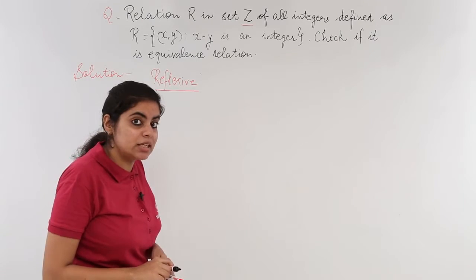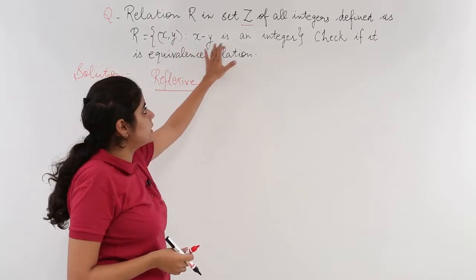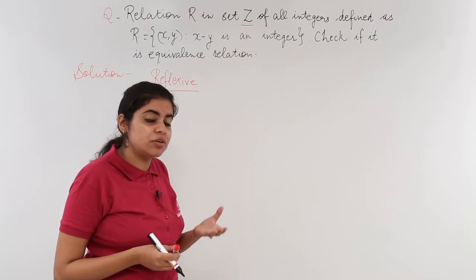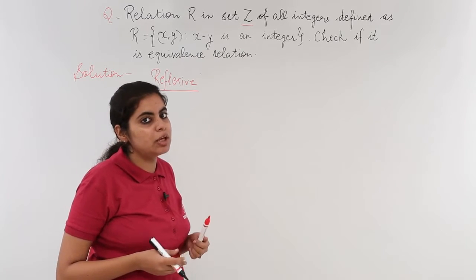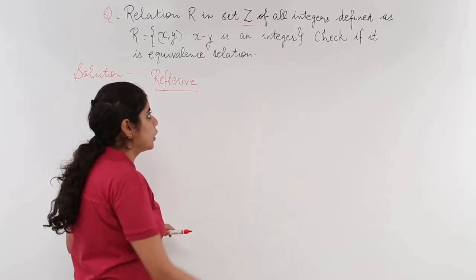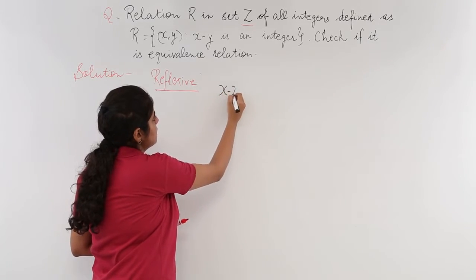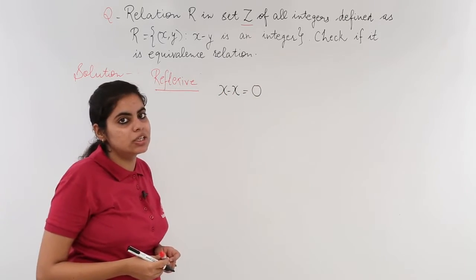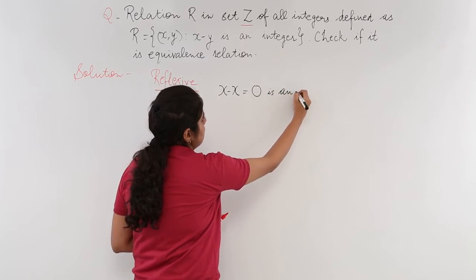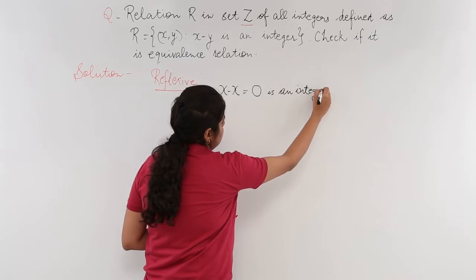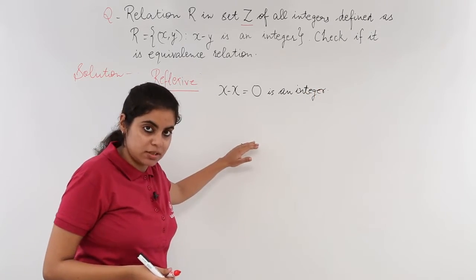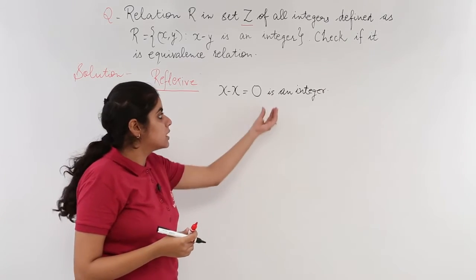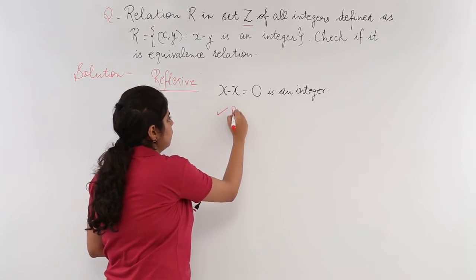Under the heading 'Reflexive', the relation given is X minus Y is an integer. If every element of a set is related to itself, it is reflexive. Replacing Y by X, we get X minus X which equals 0. Since 0 is an integer, this relation is reflexive for all X belonging to the integers.